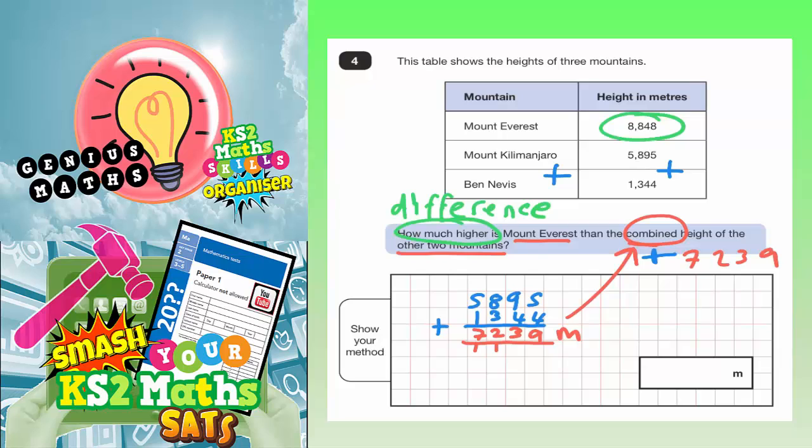So here we go. So we're going to start with 8,848. When you're finding the difference, that means it's a subtract. And whenever you do a subtract, you always put the larger number on the top. So 8,848 is larger than 7,239.